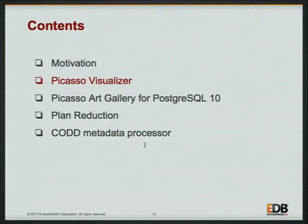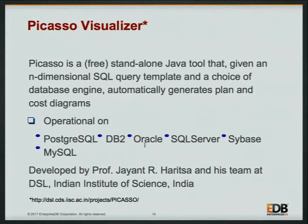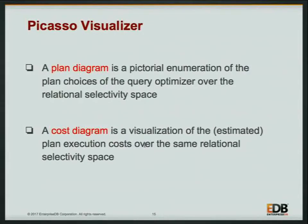Picasso is a free standalone Java-based tool. Given an n-dimensional query template and a choice of database, it can automatically generate a plan diagram and cost diagram. It was developed by Professor Jain Harish and his team at IISc India — Kuntal was part of that team. The plan diagram is a pictorial enumeration of the plan choices of the optimizer over the relational selectivity space. The cost diagram is a visualization of the execution plan cost over the same selectivity space.